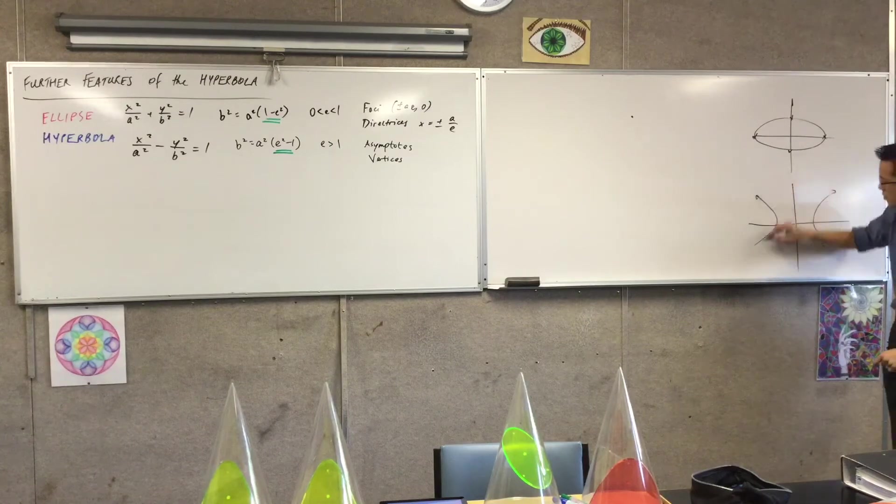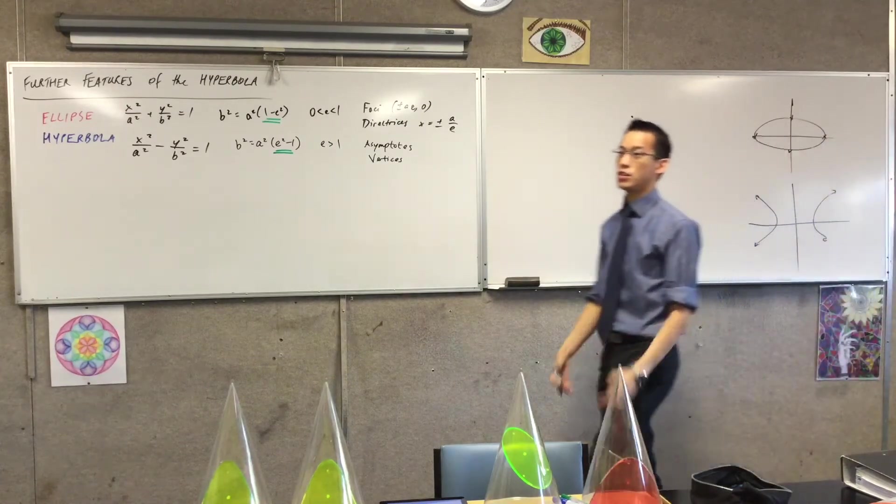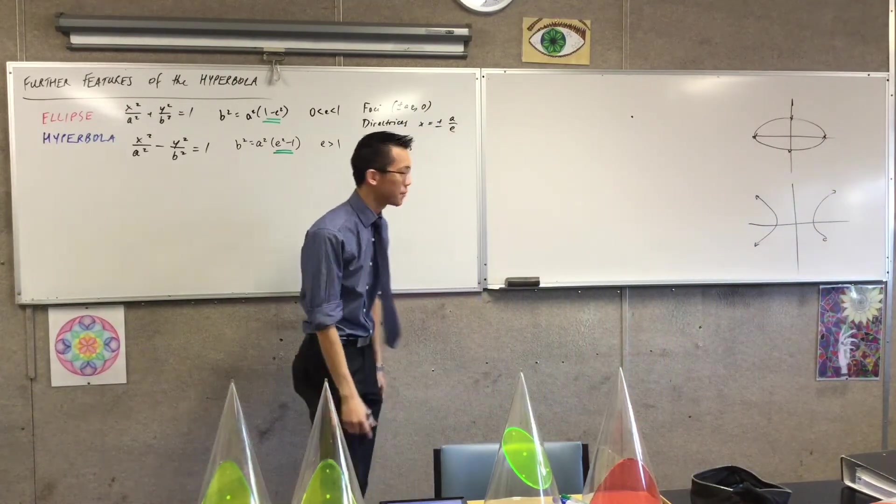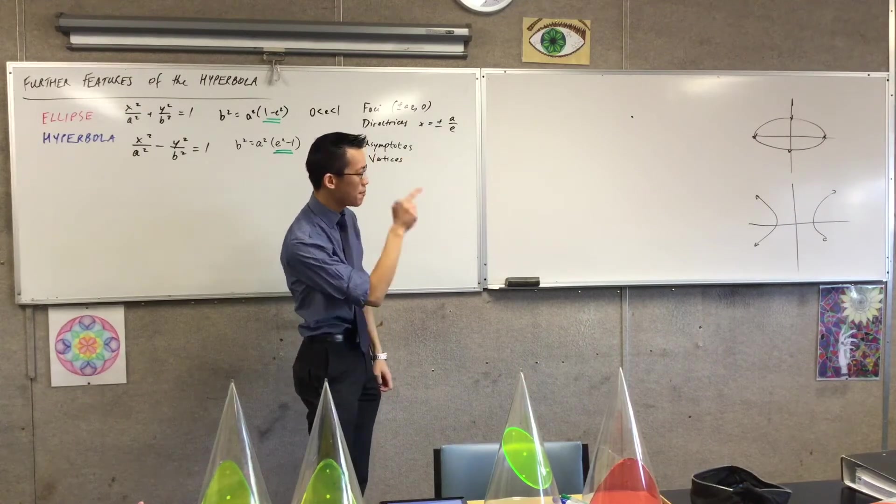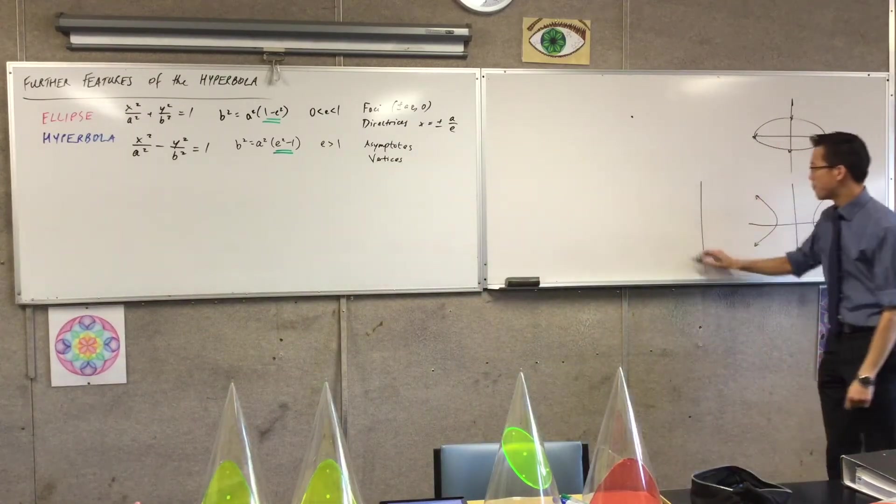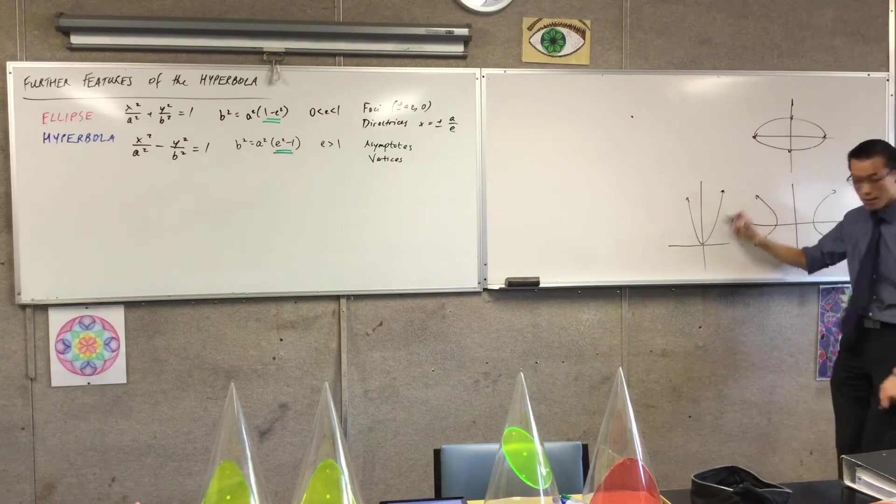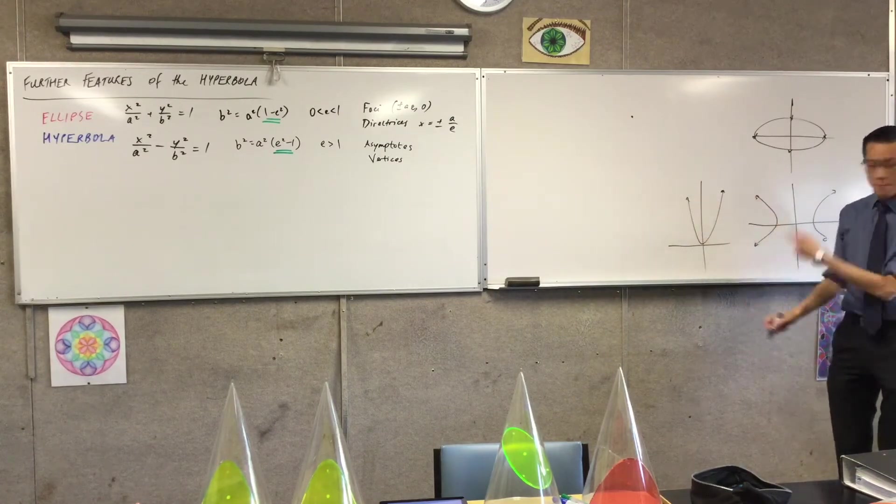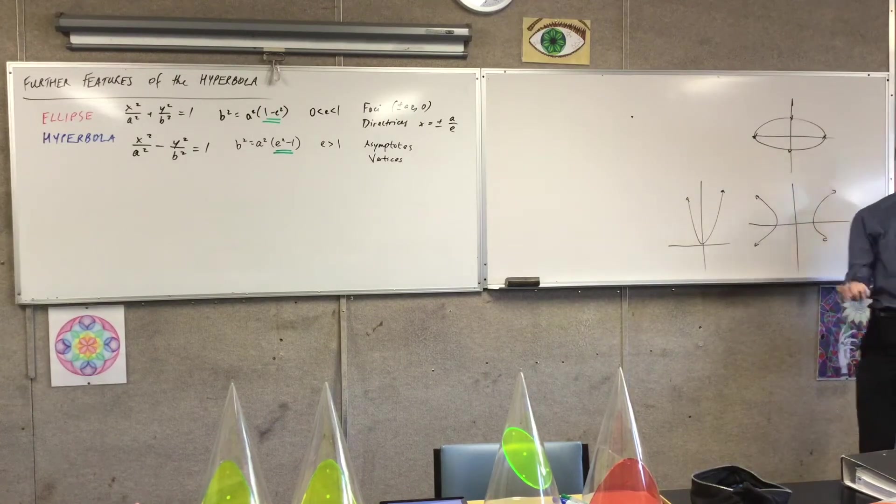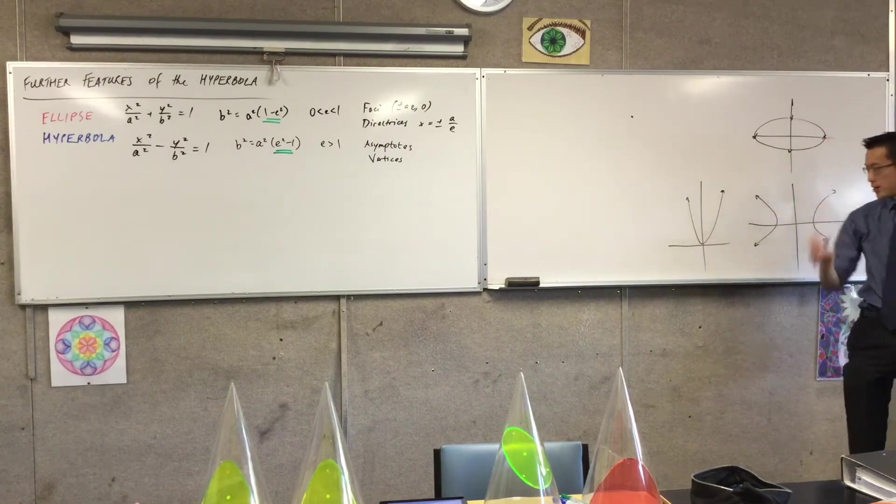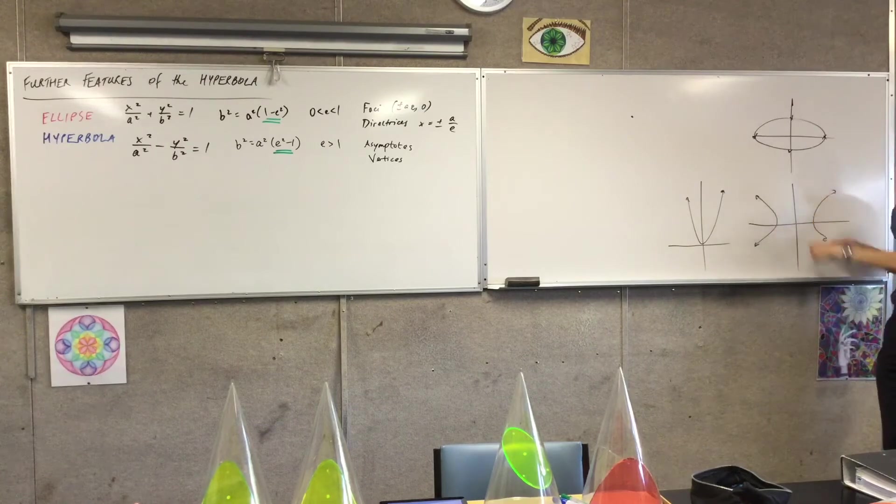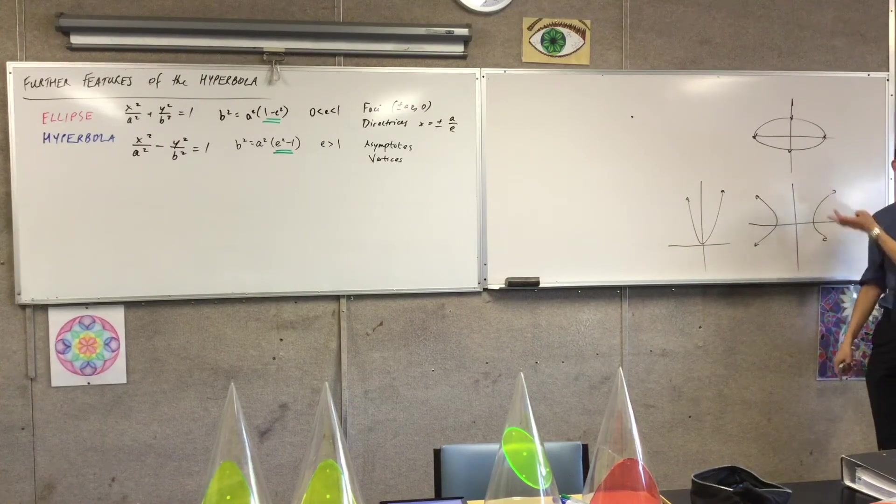But for a hyperbola the intercepts are not just intercepts, they represent a change in the behavior of a hyperbola, right? In fact it's the same behavior that we see in a parabola, right? Where's that? It's a turning point, okay?